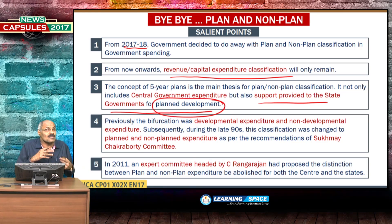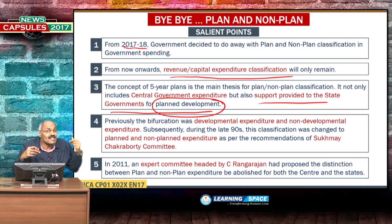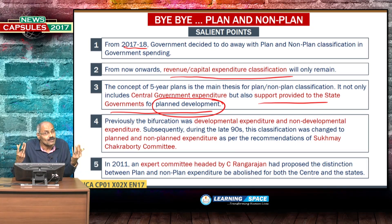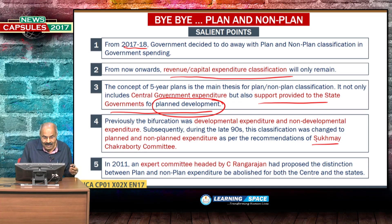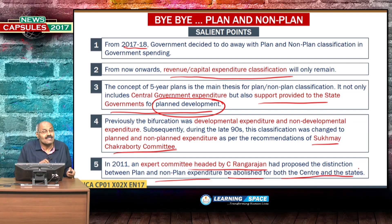Previously, almost till 20 years ago, there used to be development expenditure and non-developmental expenditure. Subsequently, it was changed to plan expenditure and non-plan expenditure as per the recommendations of the Sukhamoy Chakravarty Committee. And in the year 2011, an expert committee headed by Rangarajan proposed that the distinction between plan and non-plan must be abolished for both centre and states.